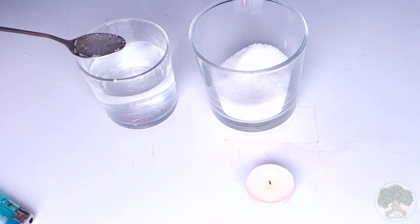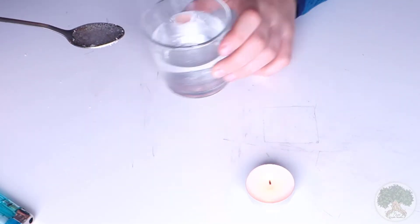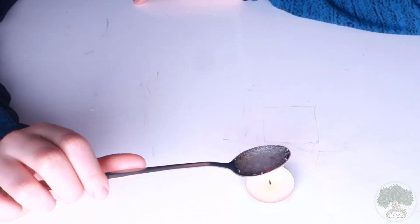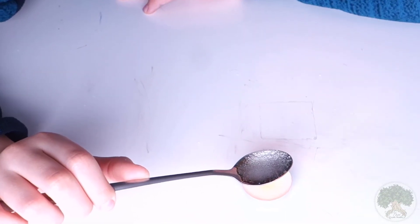Once you have your spoon prepared, put it over the flame. But don't let the flame touch the spoon or the bottom will be covered in a thin layer of black soot. And the mixture will start bubbling.